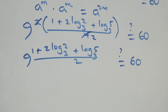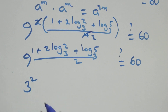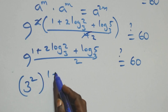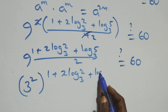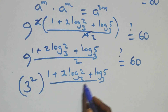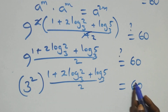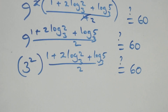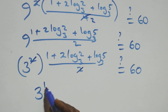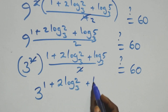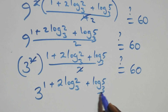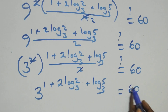The power of 2 cancels, and 9 can be expressed as 3 squared. So we have (3 squared) raised to power (1 plus 2 log 2 base 3 plus log 5 base 3) over 2. The power multiplies, giving 3 raised to power (1 plus 2 log 2 base 3 plus log 5 base 3), which equals 60.